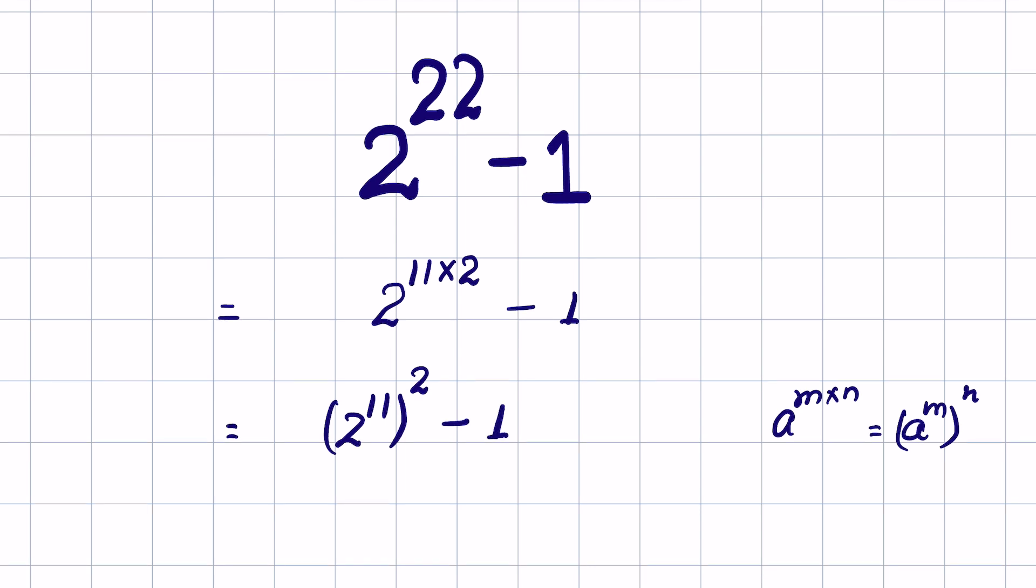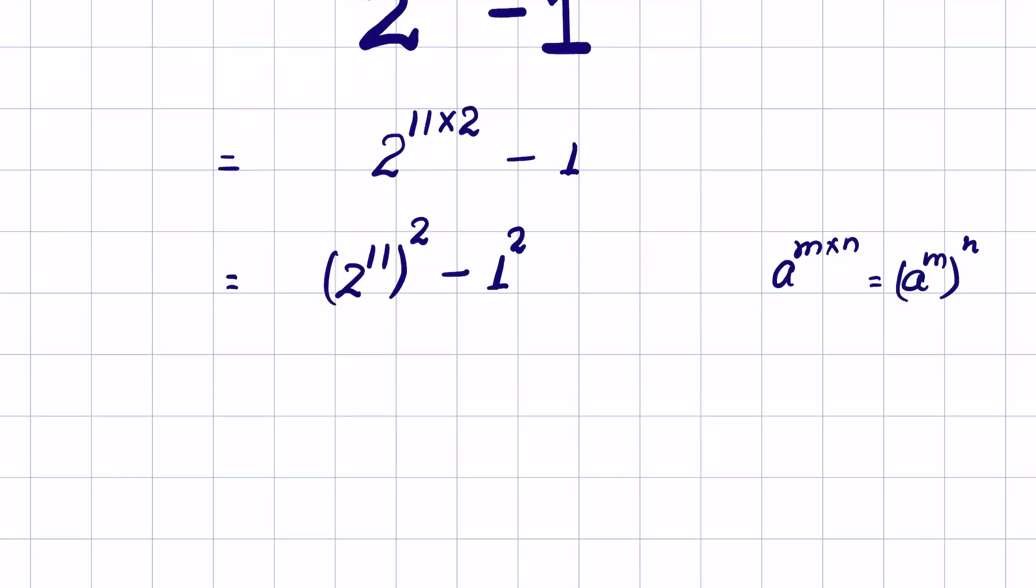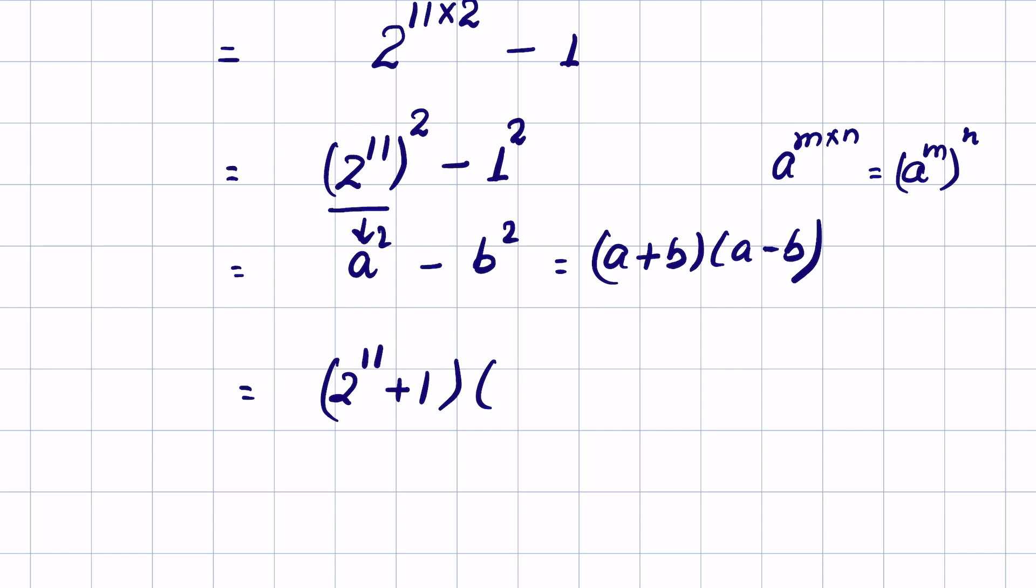1 can be written as 1 squared. This is in the form a squared minus b squared. If we consider 2 raised to the power 11 as a and 1 as b, then a squared minus b squared equals a plus b times a minus b. This becomes 2 raised to the power 11 plus 1, times 2 raised to the power 11 minus 1.